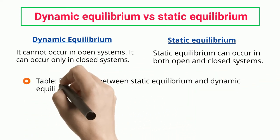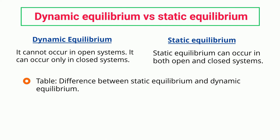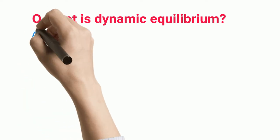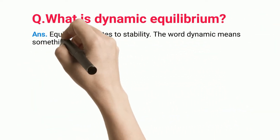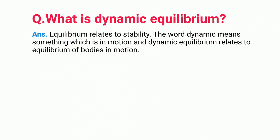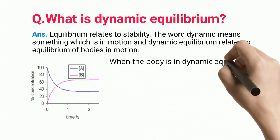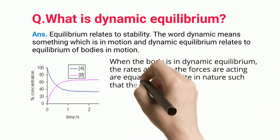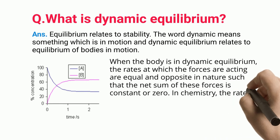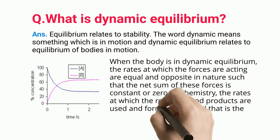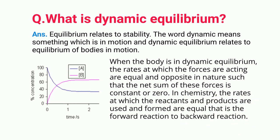What is dynamic equilibrium? Equilibrium relates to stability. The word dynamic means something which is in motion, and dynamic equilibrium relates to equilibrium of bodies in motion. When the body is in dynamic equilibrium, the rates at which the forces are acting are equal and opposite in nature such that the net sum of these forces is constant or zero. In chemistry, the rates at which the reactants and products are used and formed are equal — that is, the forward reaction equals the backward reaction.